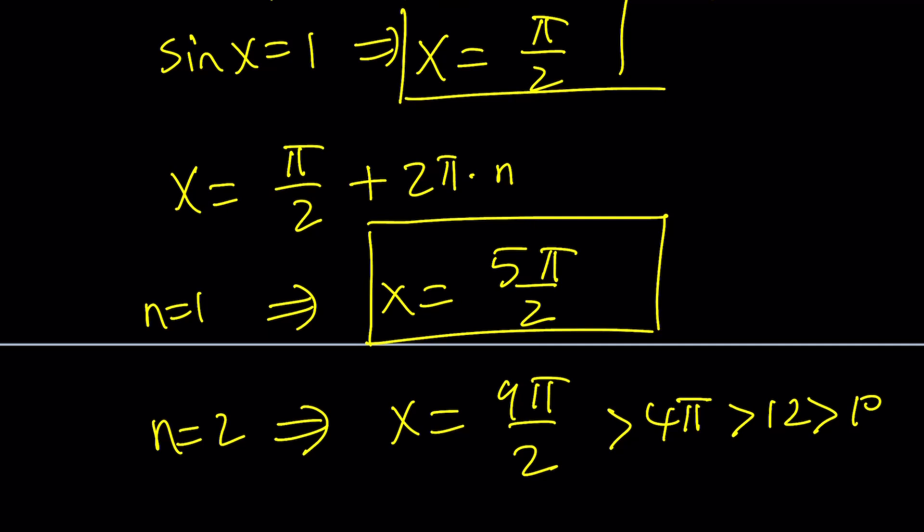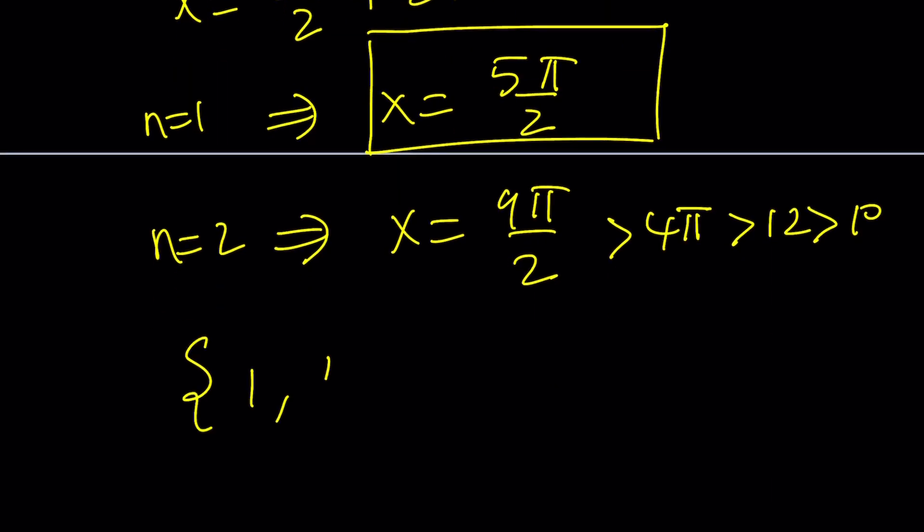So conclusion, our solutions are 1, pi over 2, and 5 pi over 2.